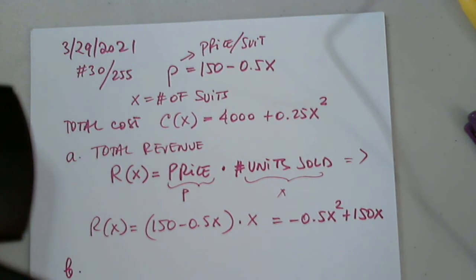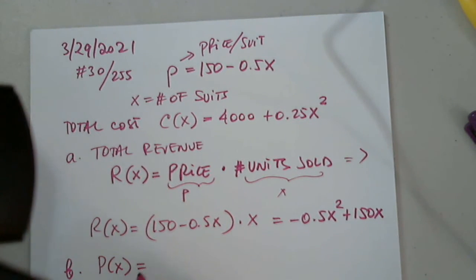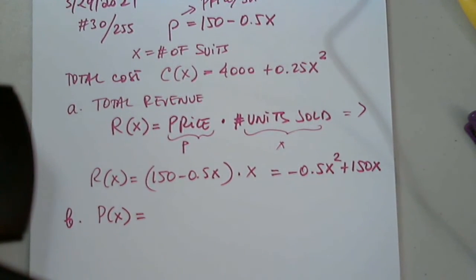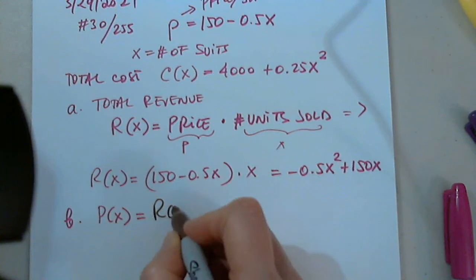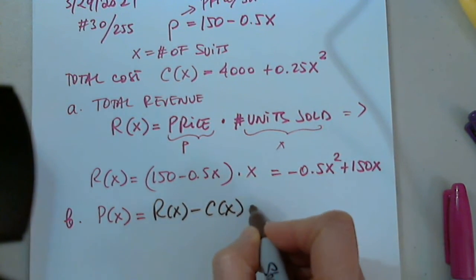In part B, any questions so far, please, anything, anyone? Okay, part B, find a total profit. Who would like to tell us how to determine the total profit? What is the formula for the total profit? Brilliant, thank you, Rita. So, revenue of X minus cost of X. Very good.